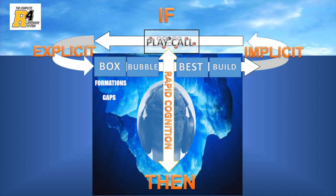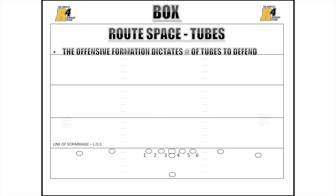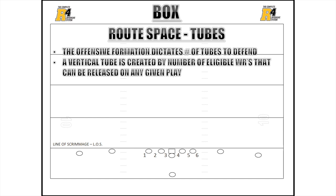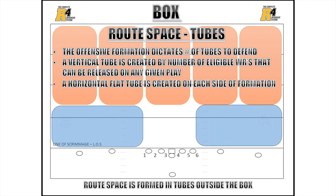The next area of space that a defense must defend is route space outside the box. Route space is located in tubes. Formations dictate the number of tubes that can be immediately attacked by the offense. The offensive formation dictates the number of tubes to defend. A vertical tube is created by the number of eligible wide receivers that can be released on a given play. There are five vertical tubes in football, due to the rule that up to five wide receivers can be released downfield on a pass play. A horizontal flat tube is created on each side of the formation outside the run box.